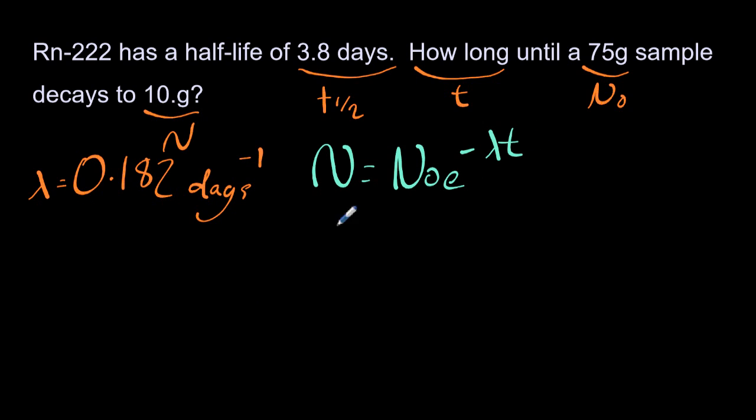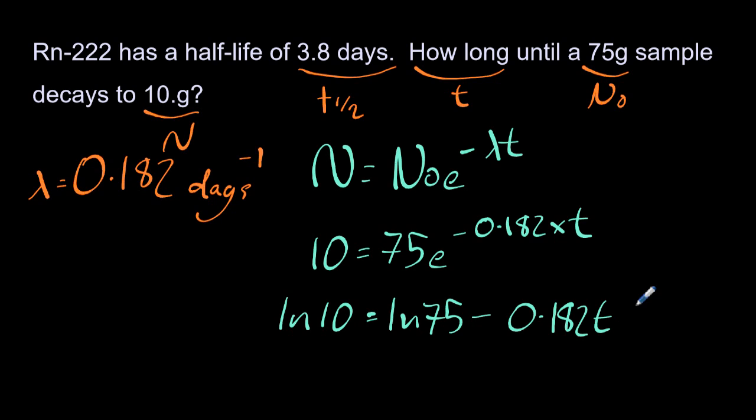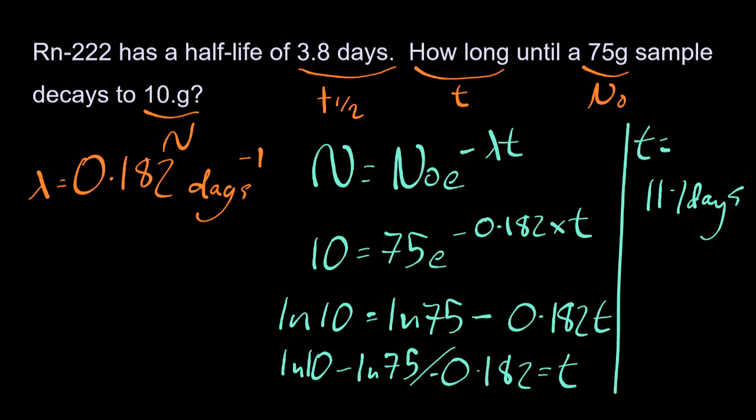Using the second equation, N is 10, and N sub 0 is 75, and that nasty exponential. So to get the exponential fixed, take the natural log of both sides. If you don't know how to do that, just memorize this format, and it will work out. Rearrange to get T on its own, not forgetting that cheeky negative that goes over. And so that's 11.1, and it must be days because half-life is in days. Two sig figs as well, so 11 days is the answer.